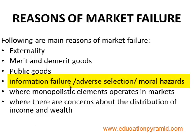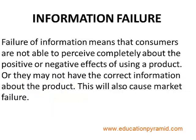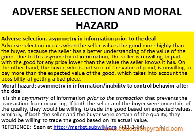Other factors causing market failure include information failure, adverse selection, and moral hazards. Information failure means consumers cannot fully perceive the positive or negative effects of using a product, or may not have correct information about it. Adverse selection occurs when the seller values the good more highly than the buyer because the seller has a better understanding of the value — for example, an insurance company selling health insurance to a person who is not serious about their health. Moral hazard is the asymmetry in information or inability to control behavior after the deal — for example, a person with a hidden illness who does not disclose their condition to the insurance company and buys insurance to take advantage.